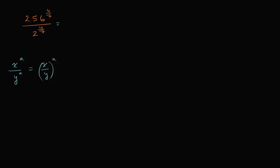So we can rewrite this. This is going to be equal to 256 over two, to the four-sevenths power. And this is nice — we can already simplify because we know 256 divided by two is 128. So this is 128 to the four-sevenths power.